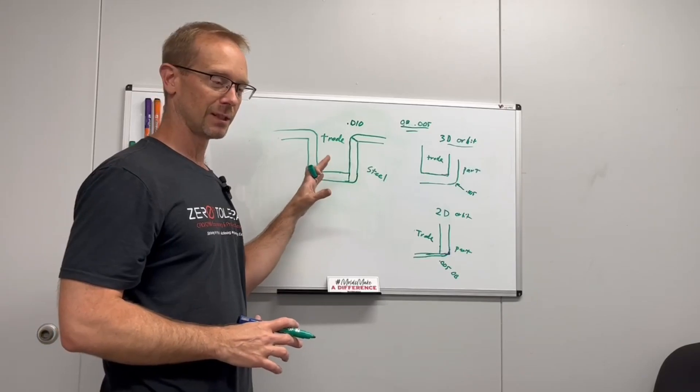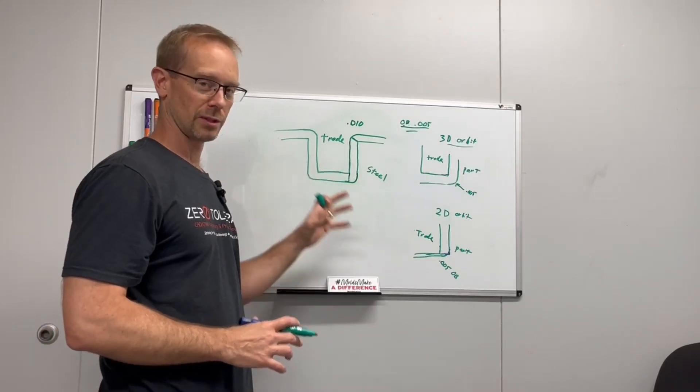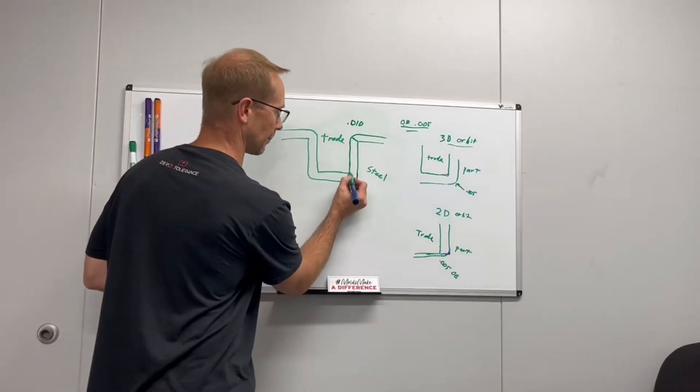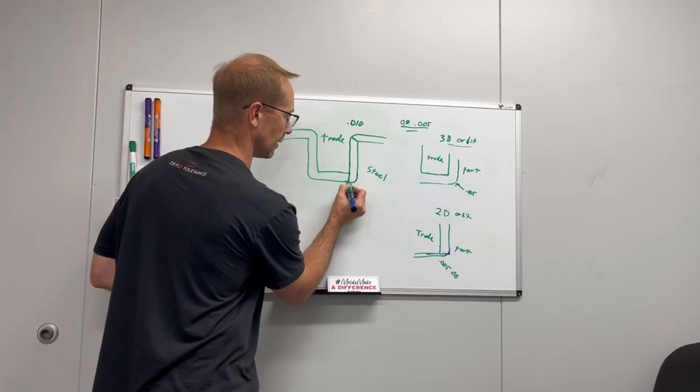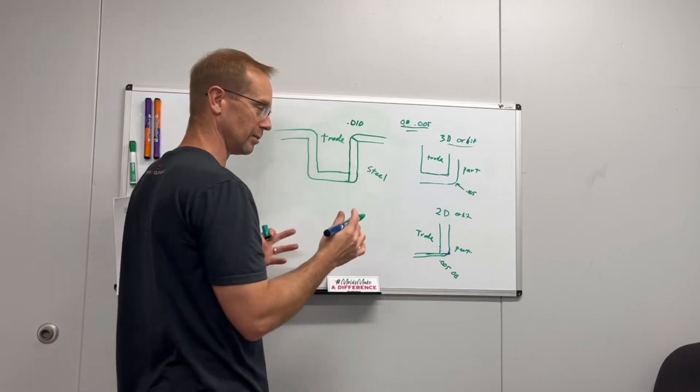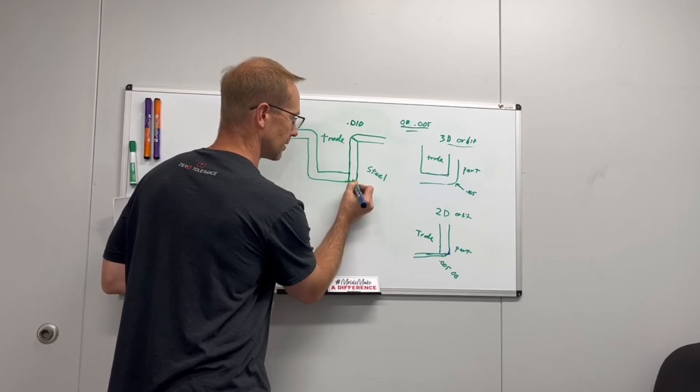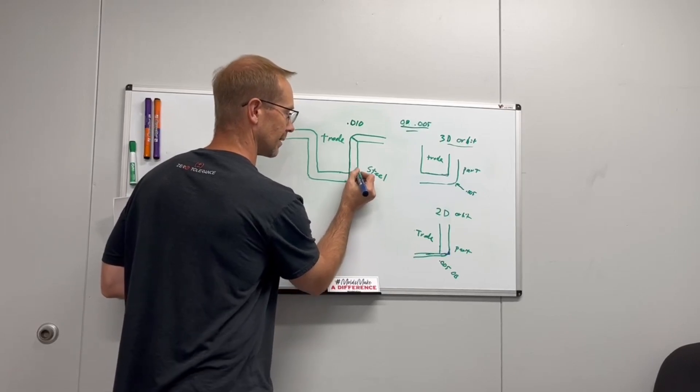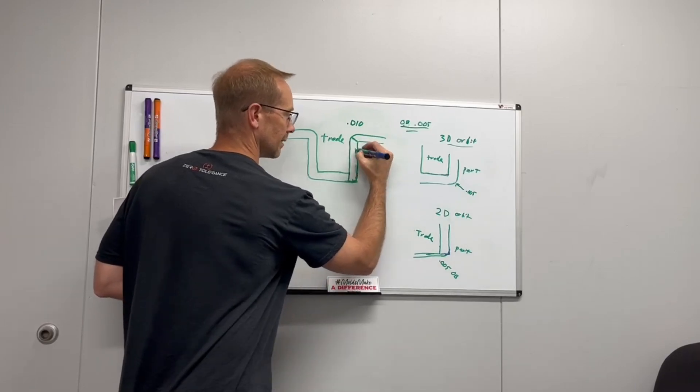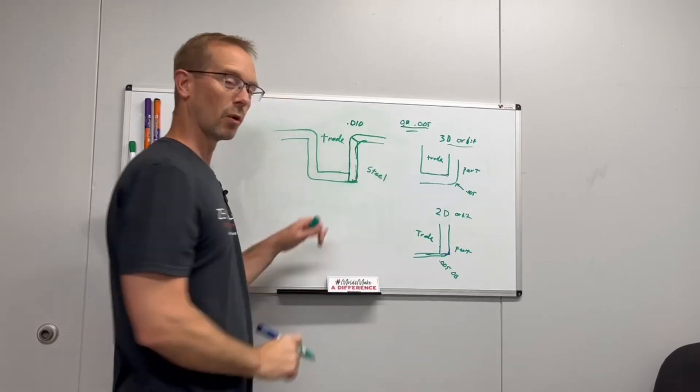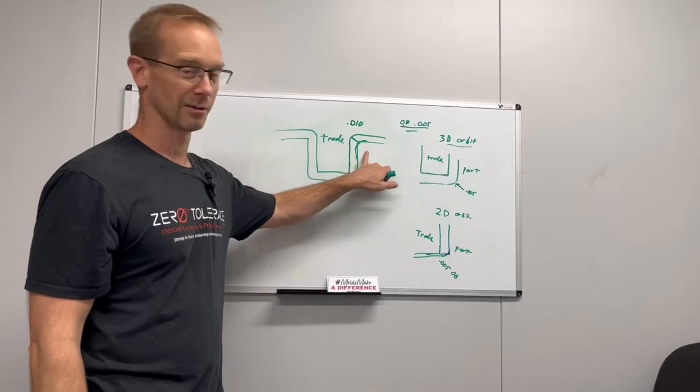If I run that same exact trode with 2D orbiting, what ends up happening? My trode comes down here, and it does its XY 2D orbit circle. And the electrode gets real close to this edge, actually violates this radius at the bottom. And then I've had this electrode with the radius here. It actually wipes out my sharp corner in the steel up here as well.